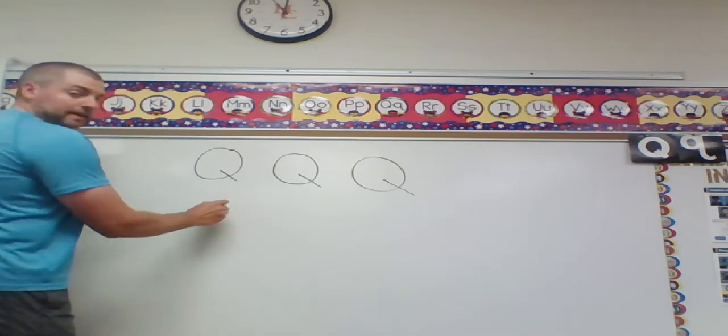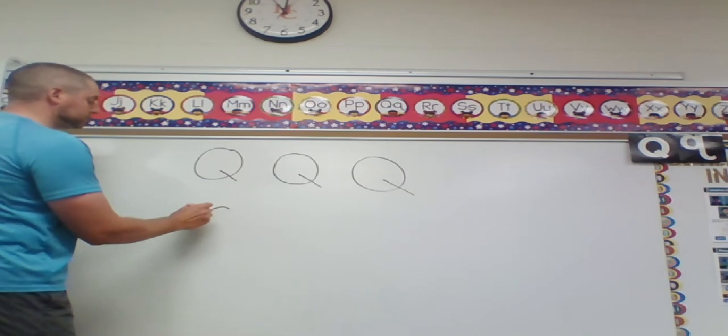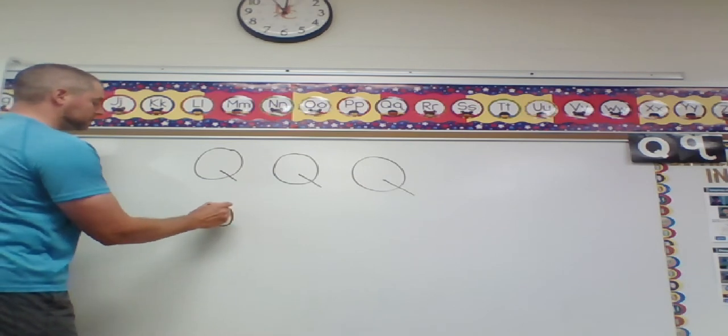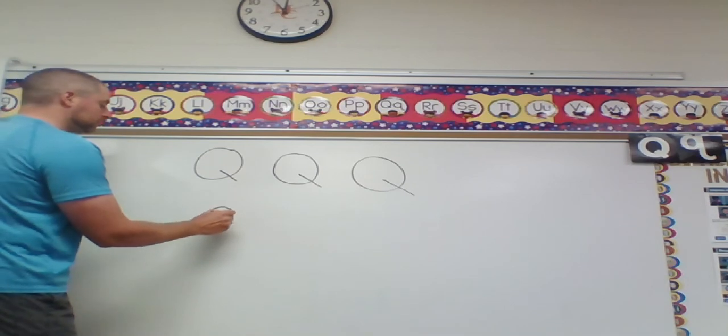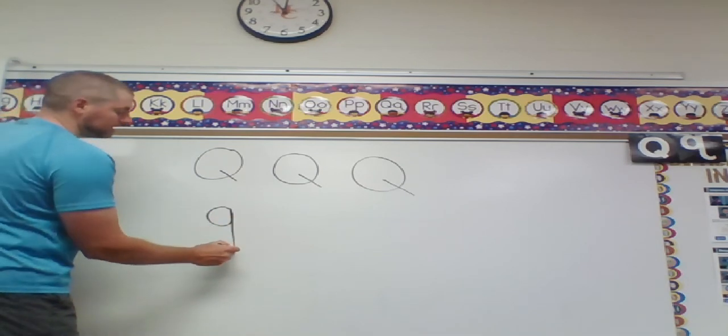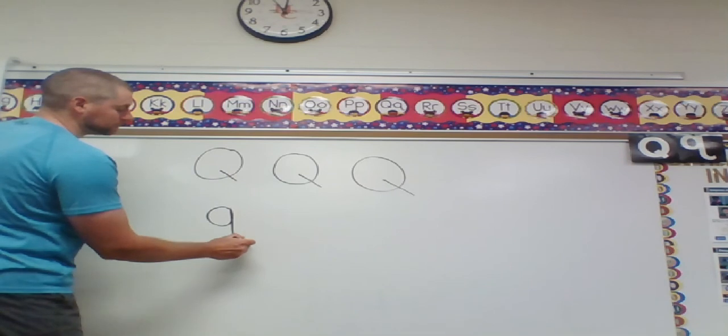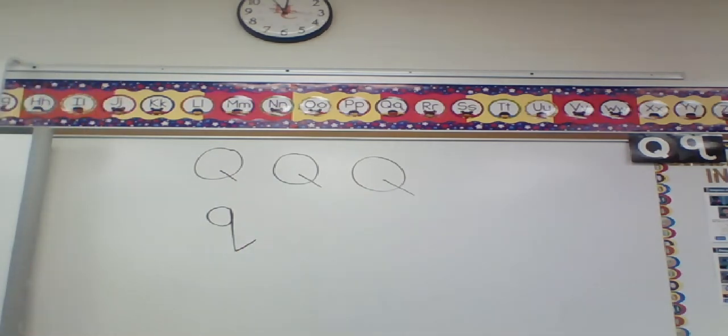I make a circle shape around, starting in the middle. And then, just like P, J, and G, Q's going to go below the bottom line, and then I make a slant up to the right this way to finish my Q.